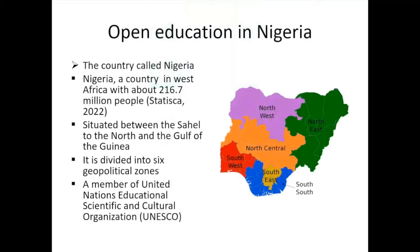Open education in Nigeria. Before we go on with the issue of open education in Nigeria, let me talk a little bit about the country called Nigeria. Nigeria is a country in West Africa with about 216.7 million people, according to statistics from 2022. Nigeria is situated between the Sahel to the north and the Gulf of Guinea. It is divided into six geopolitical zones: Northwest, Northeast, North Central, Southwest, Southeast, and South-South. Nigeria is also a member of UNESCO. Hence, education is key to power development.